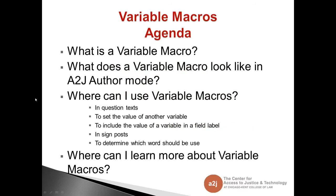On our agenda, we have: What is a Variable Macro? What does a Variable Macro look like in A to J Author mode? Where can I use Variable Macros and the five places they can be used? And where can I learn more about Variable Macros?